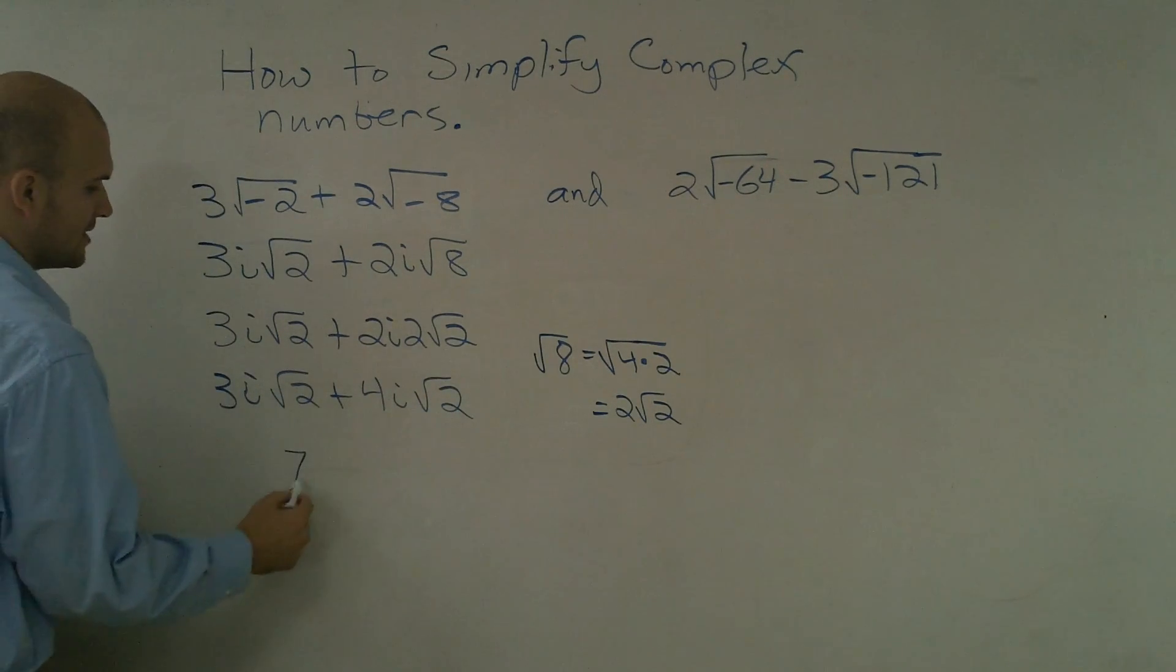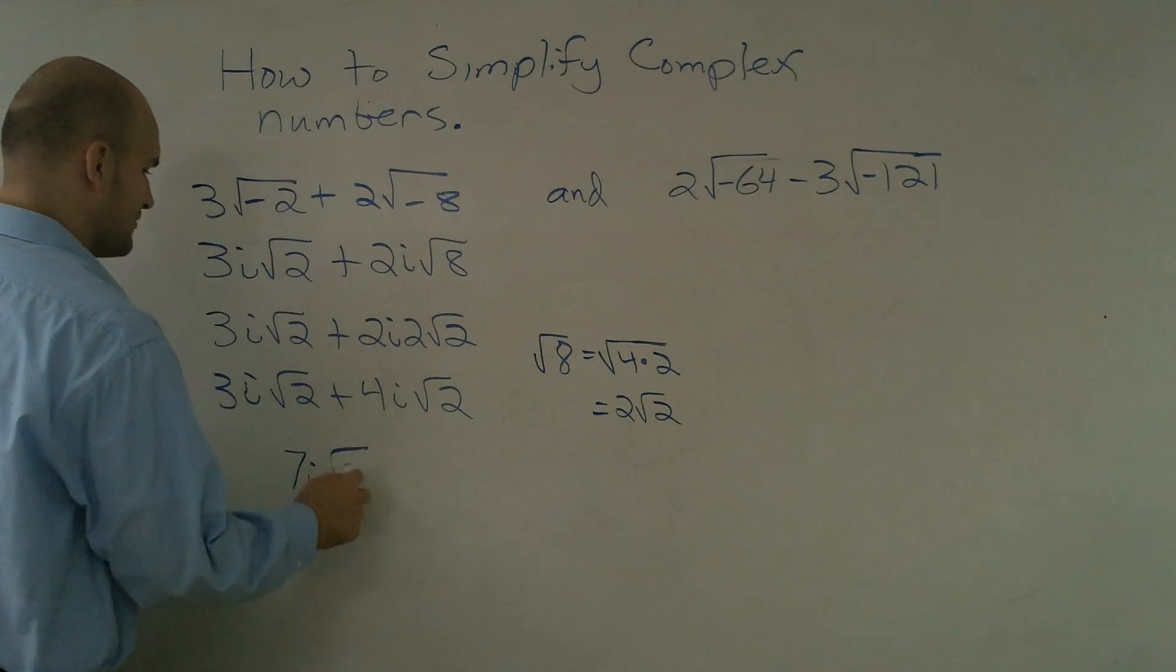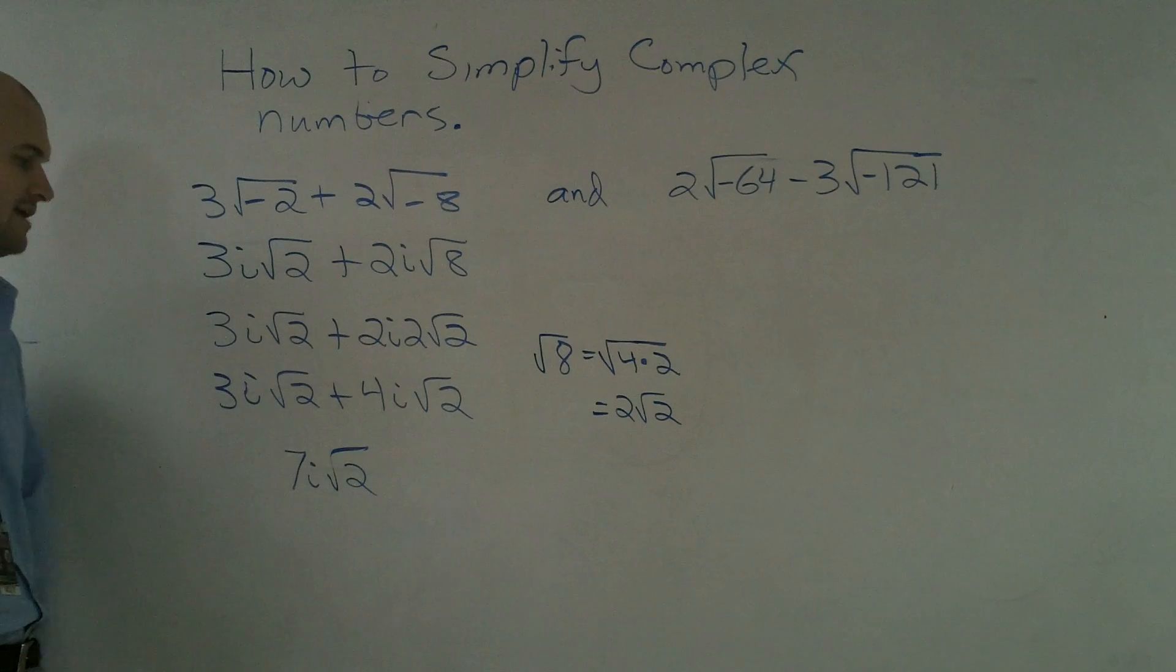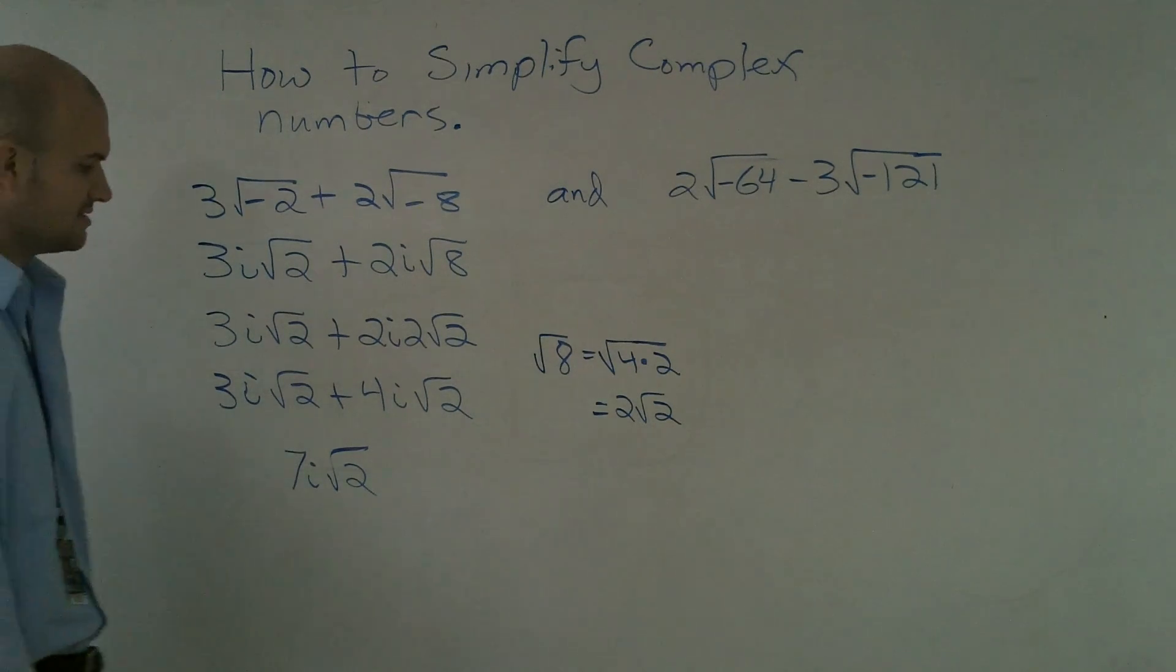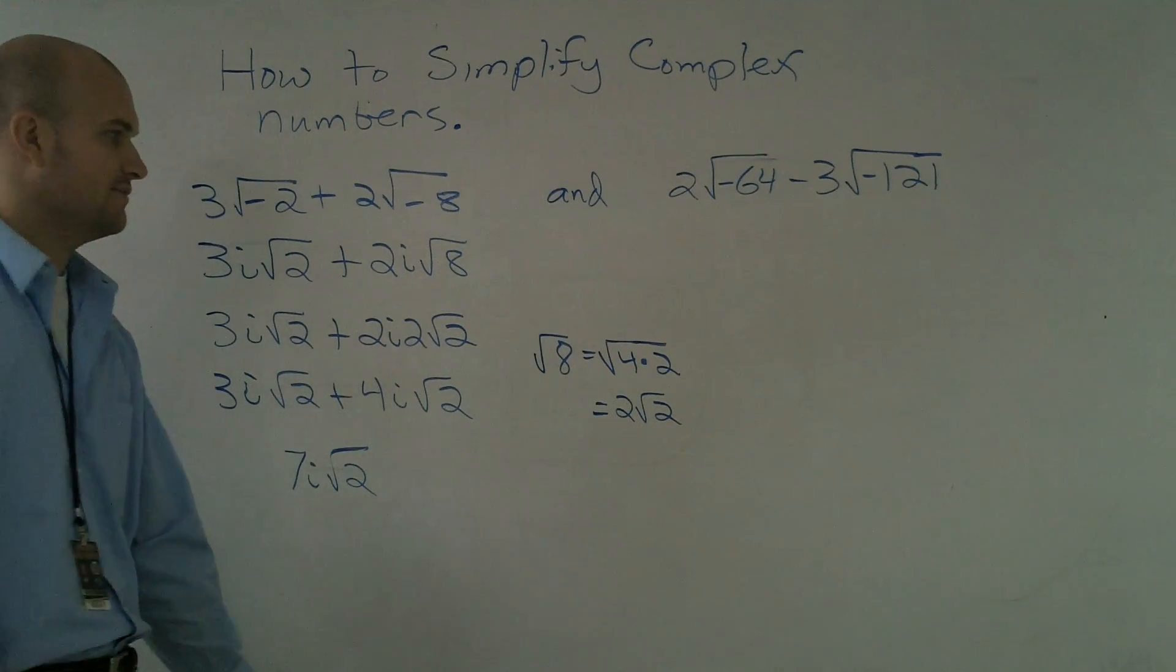3i square root of 2 plus 4i square root of 2. It says now to add. So it becomes 7i plus... And since my roots are exactly the same, I can combine those as well. So the final answer would be 7i times the square root of 2.